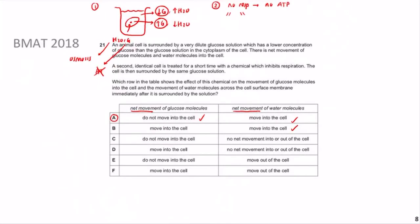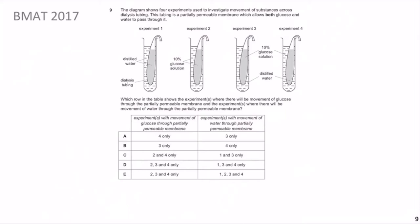Now we move to BMAT 2017 Question 9, a really important question for understanding what the BMAT is testing. The question describes an experiment investigating movement of substances across a dialysis tube. A dialysis tube is a tube with small holes allowing certain substances through but not others - it's a partially permeable membrane. This particular tubing is designed to allow both glucose and water to pass through. The question asks which of four experiments show movement of glucose and movement of water through the membrane.